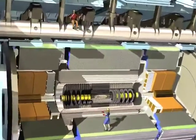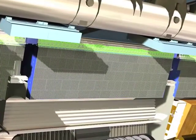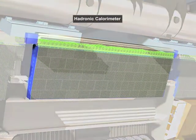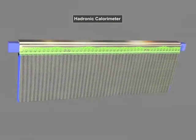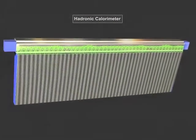Now we see the large outer calorimeter, the hadronic calorimeter. This device is used to measure the energies of a set of particles called hadrons that includes neutrons, protons and mesons.